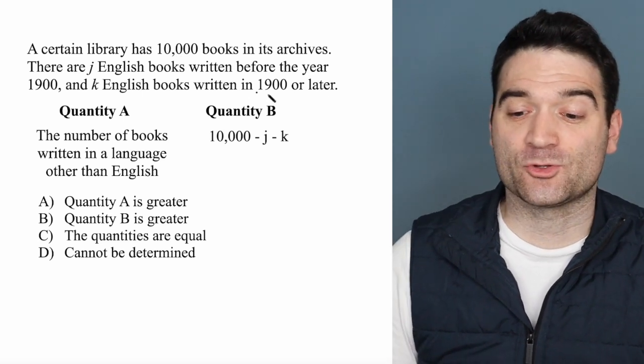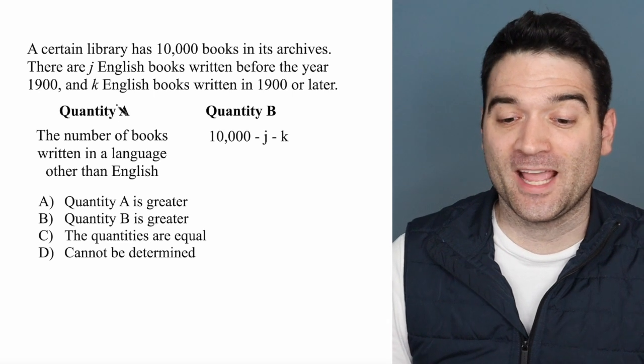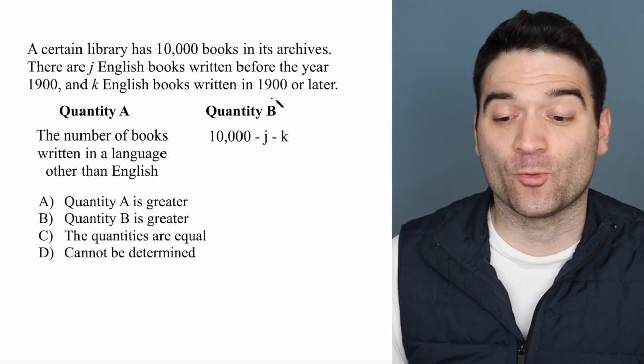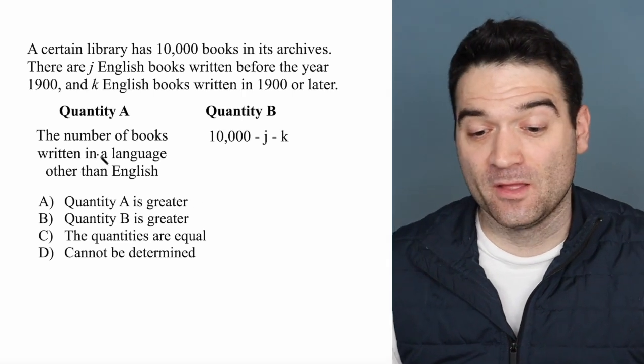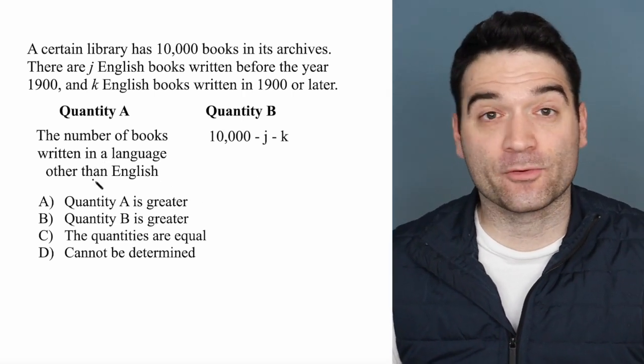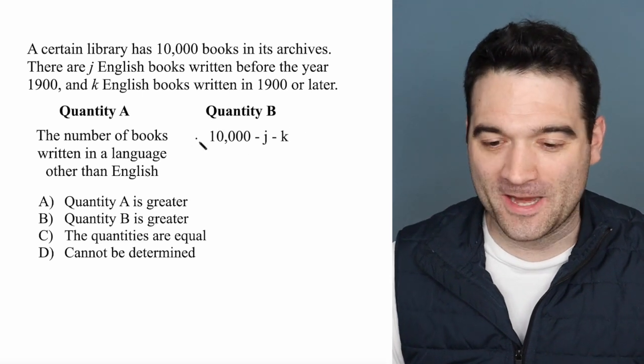There are J English books written before the year 1900 and K English books written in 1900 or later. So we want to know what's greater: the number of books written in a language other than English or this value right here.